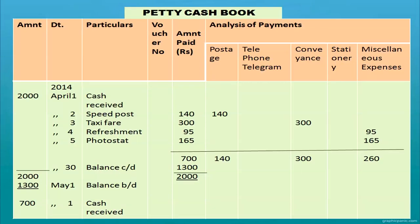One more petty cash book example: cash received is 2,000. Expenses include speed post 140 — written in the postage column; taxi fare in the conveyance column; refreshment in the miscellaneous column; photostat 165 rupees in the miscellaneous column. Total all the analysis of payment columns. Biggest total is 2,000; total spent is 700 rupees; balance carried down is 1,300. That amount is brought down on May 1st. The petty cashier should receive 700 rupees from the main cashier this month.